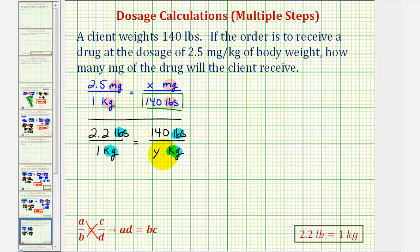When we cross multiply to form the equation, we will leave off the units. So 2.2 times y, that's 2.2y, equals one times 140, which would be 140. And now we'll divide both sides by 2.2 to solve for y.